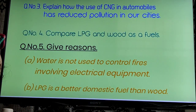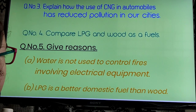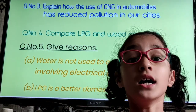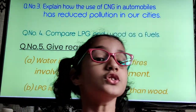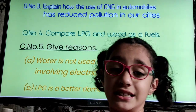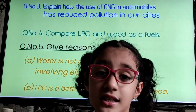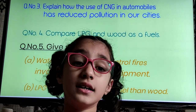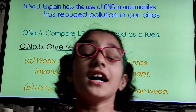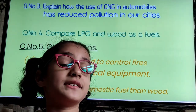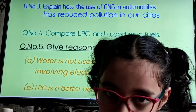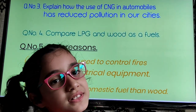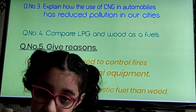Question Number 3: Explain how the use of CNG in automobiles has reduced pollution in our cities. The use of CNG in automobiles has reduced pollution in our cities as it is a quality fuel and has some benefits. Number 1, it gives out less carbon dioxide, carbon monoxide, sulfur dioxide and nitrogen dioxide.